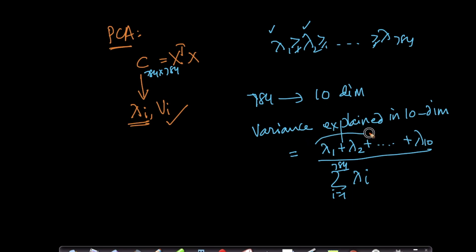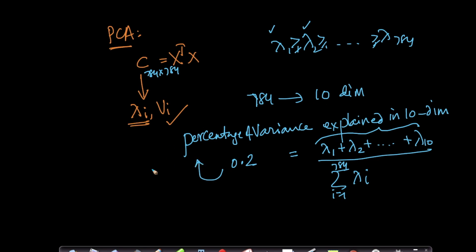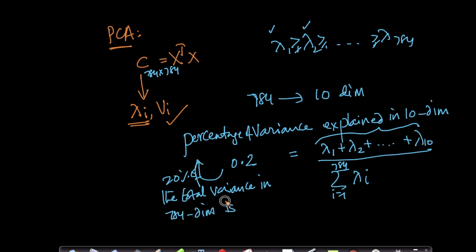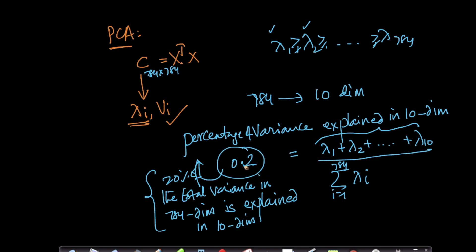This ratio — sum of the first top 10 eigenvalues divided by the sum of all eigenvalues — tells me what percentage of variance is explained. Suppose this number is 0.2: that means 20% of the total variance in 784 dimensions is explained in 10 dimensions. Only 20% of the information is retained when projected to 10 dimensions. If you are okay with that, 10 is a good number.